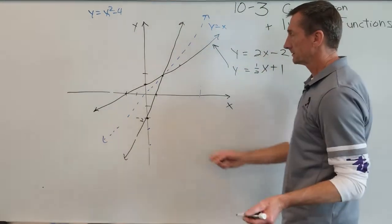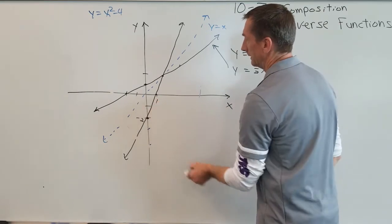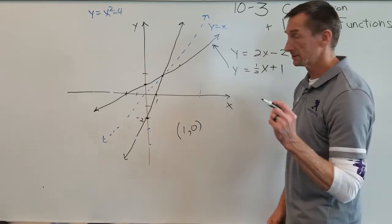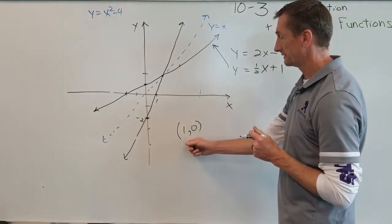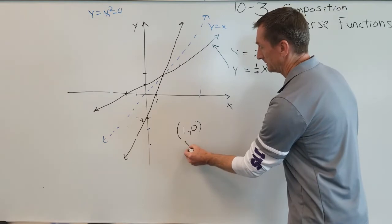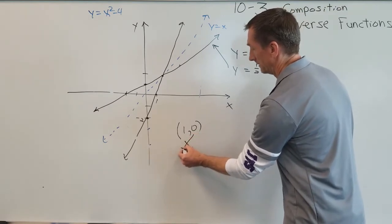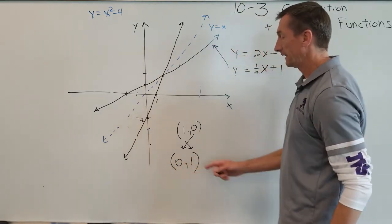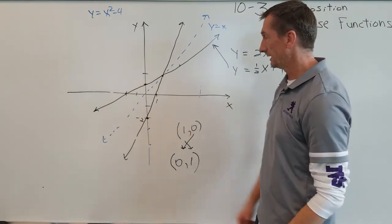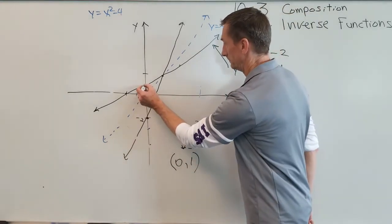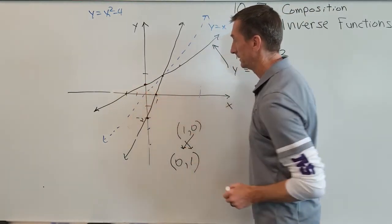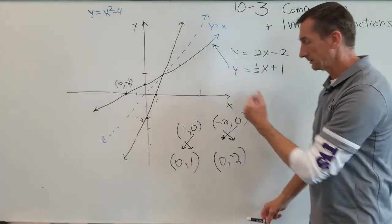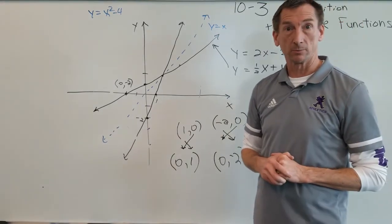And another thing that's cool, let me show you. Let's look at this point right here. That point right there is 1, 0. So if I were to look at that same point, except let's crisscross the two numbers, 0, 1. That number will also be the mirror image on the other function. So 0, 1, and 1, 0, mirror image. That's what they look like graphically. Let me show you how to find them algebraically.